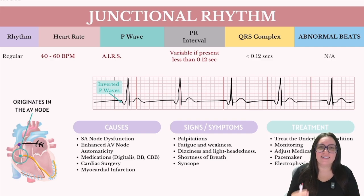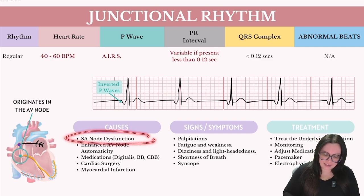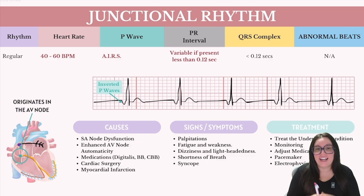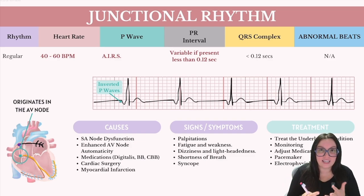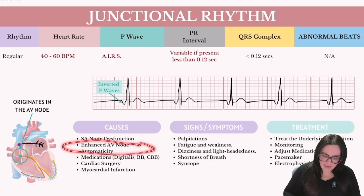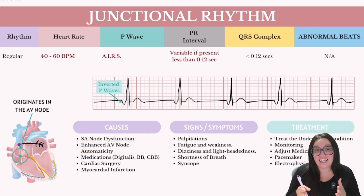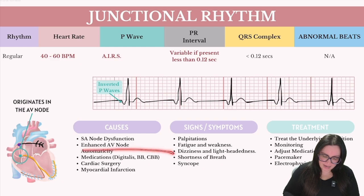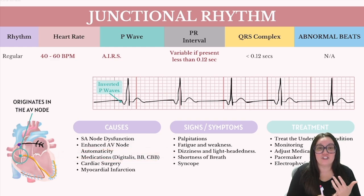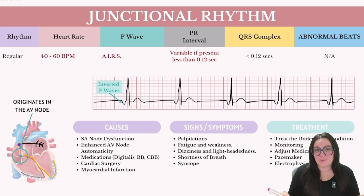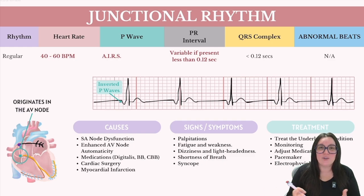So let's talk about the causes. One of the things could be SA node dysfunction — that's the failure of the SA node to generate an impulse or some kind of blockage not allowing that impulse to exit the SA node. We can also see enhanced AV automaticity, meaning the AV node increases its intrinsic pacemaker activity. There could also be medications causing this — things like digitalis, beta blockers, and calcium channel blockers that suppress SA node activity or enhance AV nodal activity.